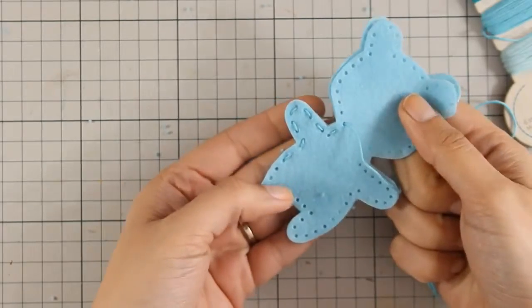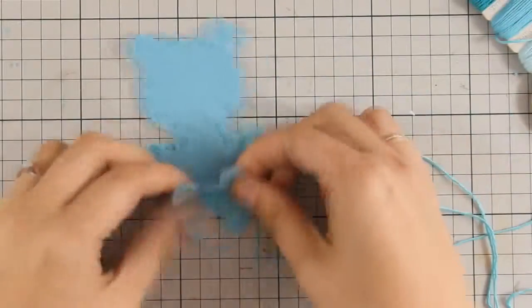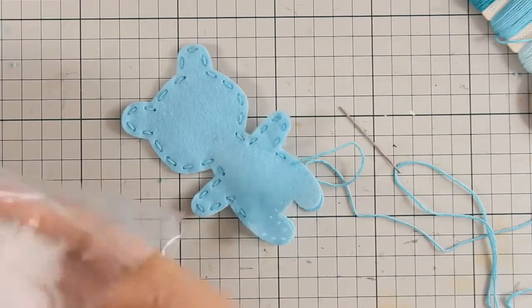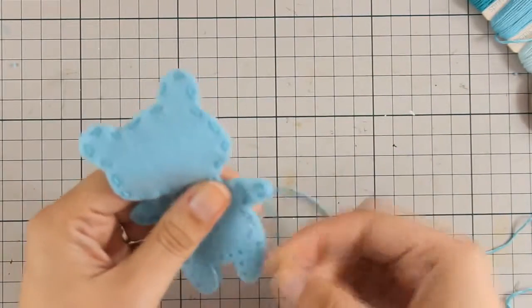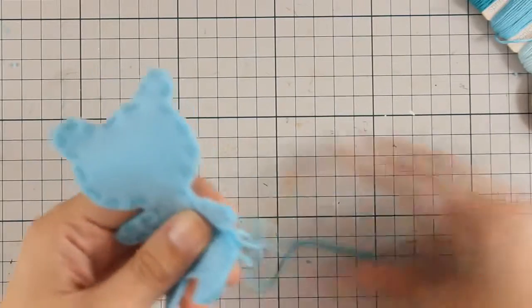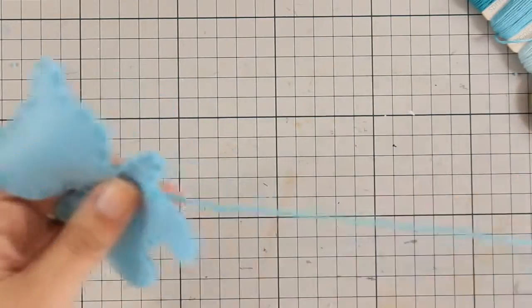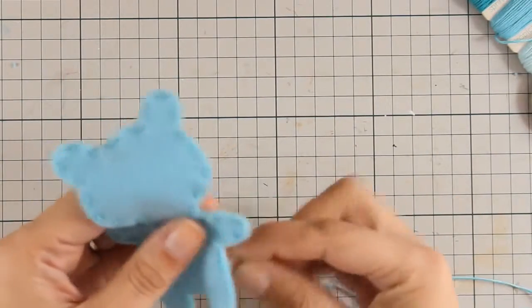So here is how it looks with all those gaps in between the stitching. If you like that look, don't forget to fill in the bear before you finish off stitching. Now I am going to go back with my needle and thread and fill in all the gaps so you can see the other look.